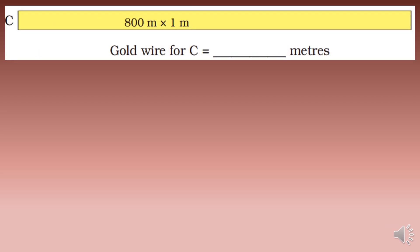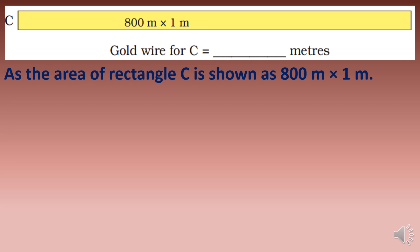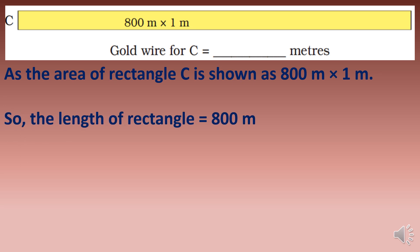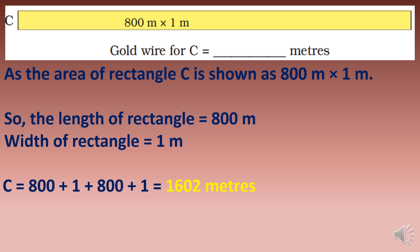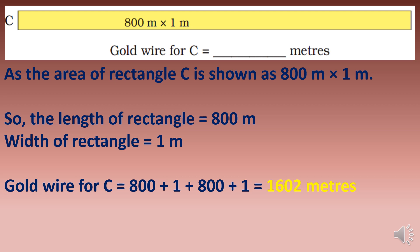Rectangle C has an area shown as 800 meters by 1 meter. The length is 800 and the width is 1 meter. The boundary is 2 times (800 plus 1), which equals 1,602 meters of gold wire.